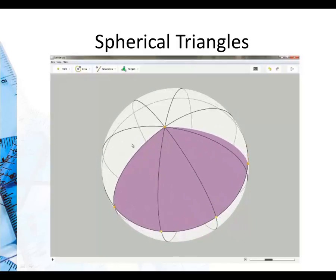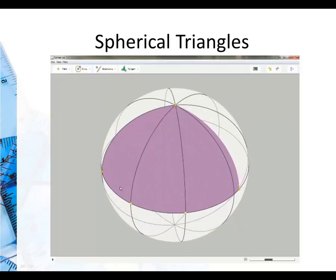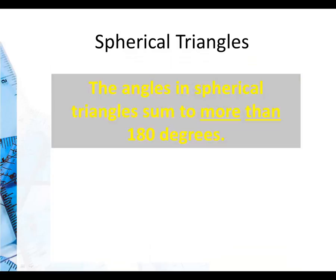I can even make this obtuse with two 90 degree angles in it. So for triangles on the surface of spheres, they can get quite large. So it's not just going to be 270 degrees, it could be anything over 180 degrees. So the angles in spherical triangles sum to more than 180 degrees.